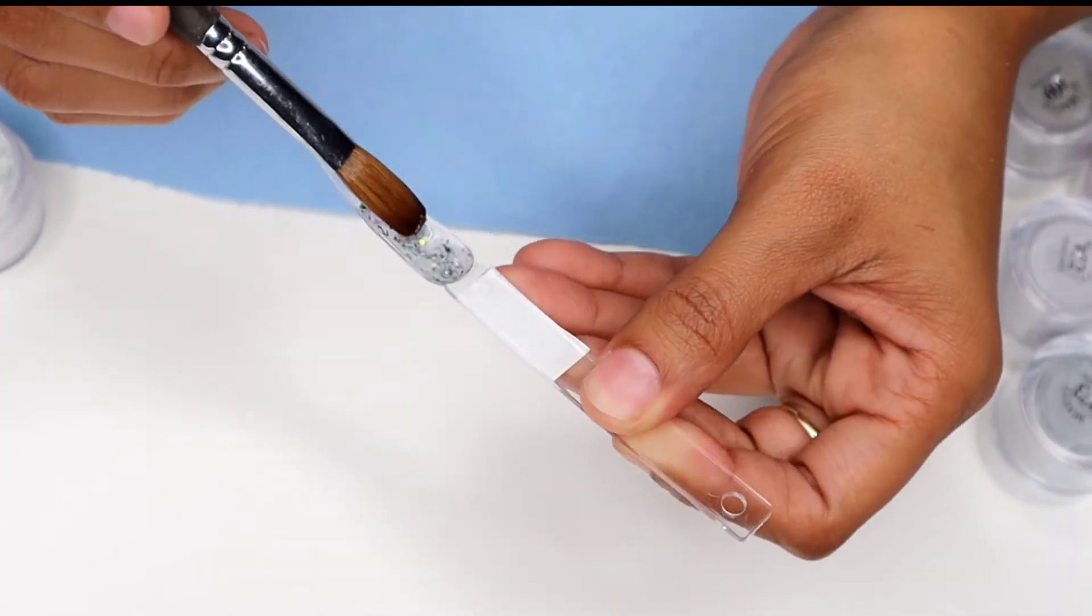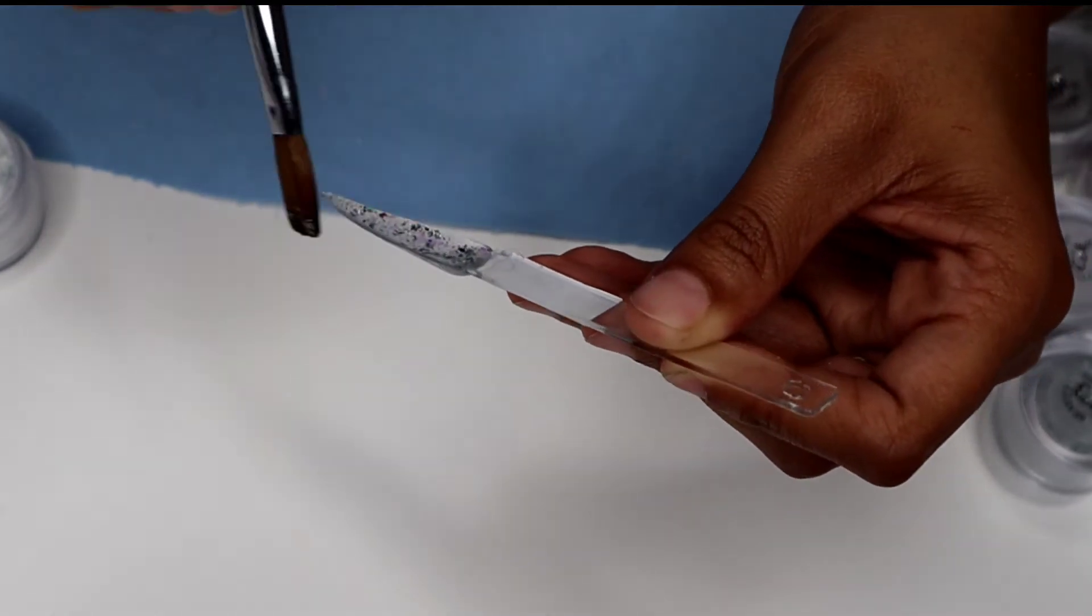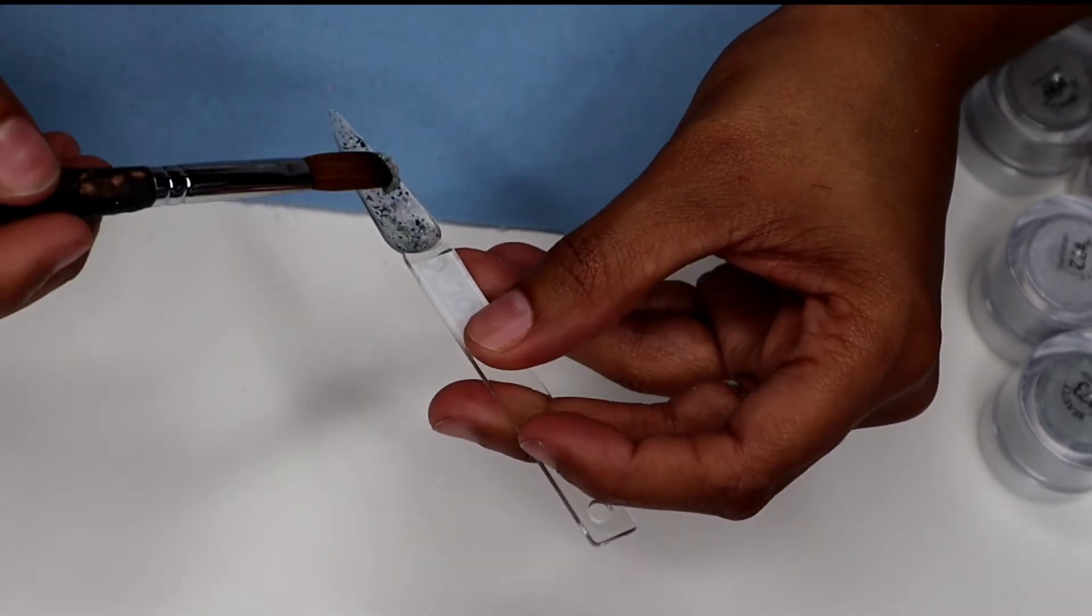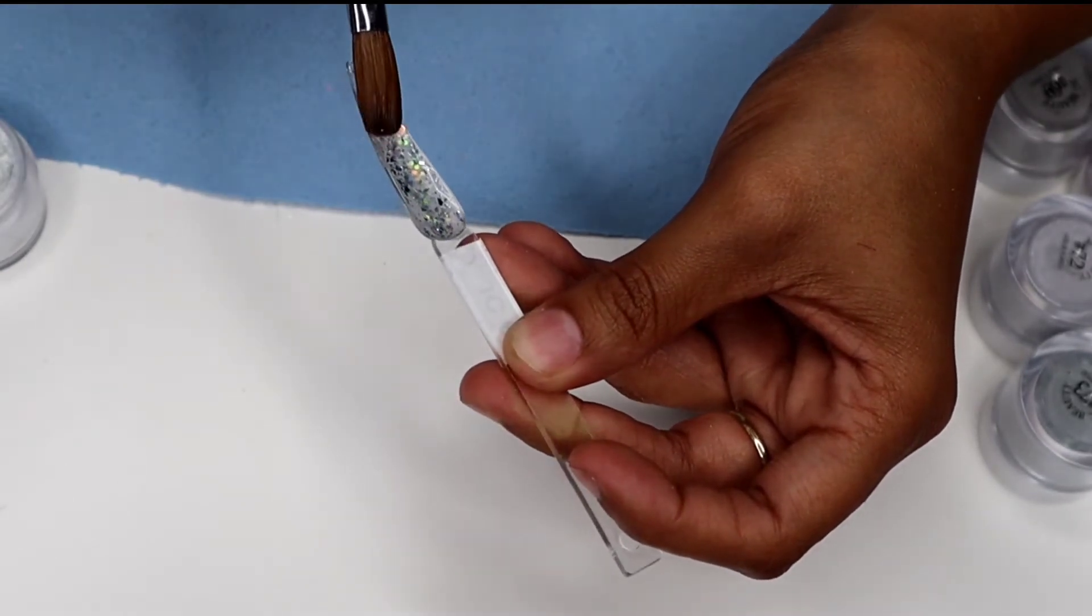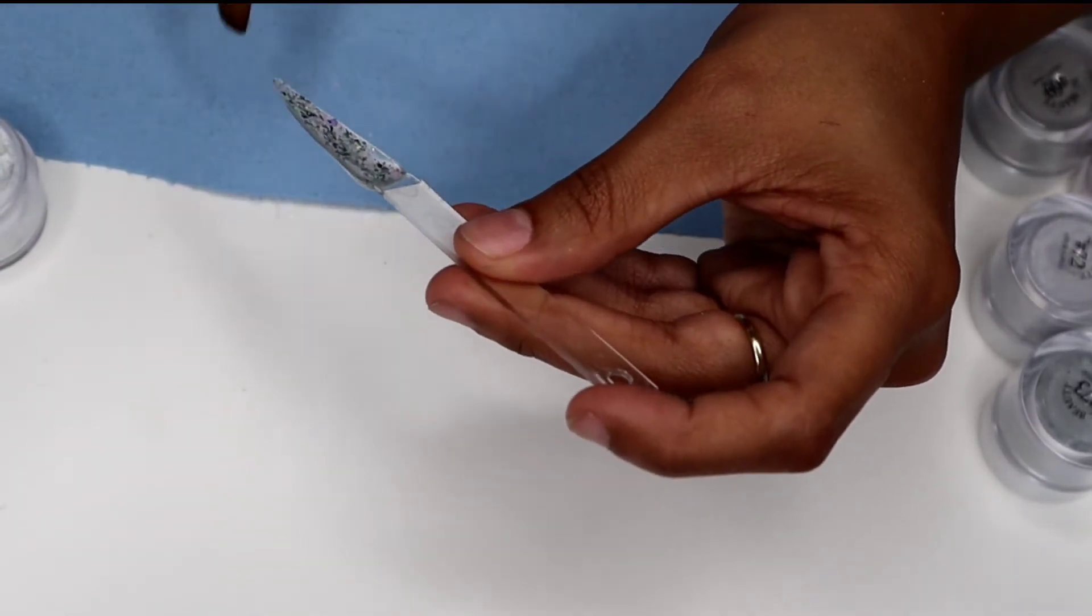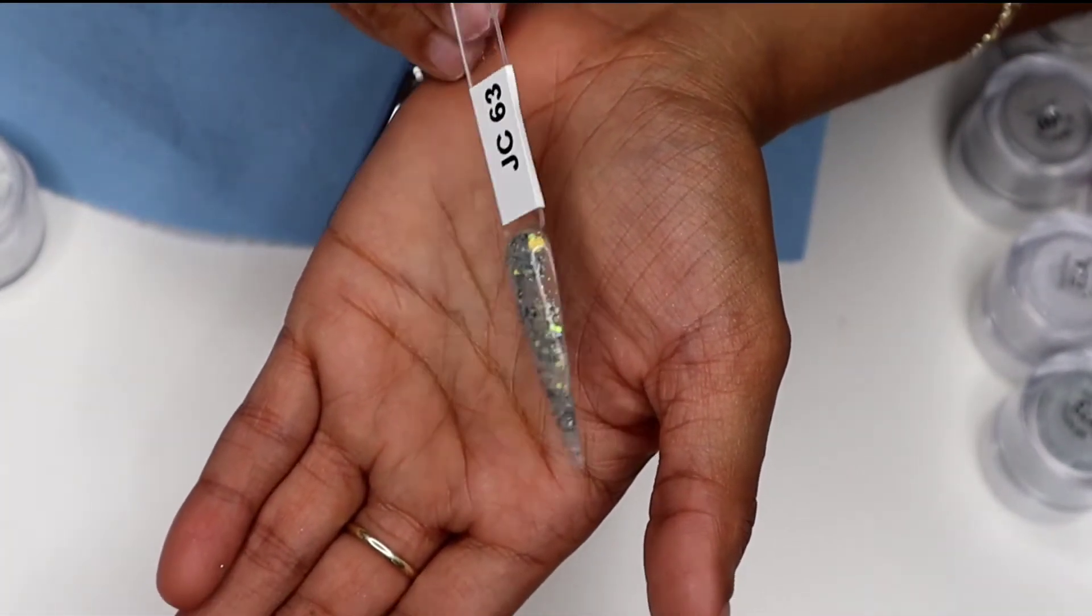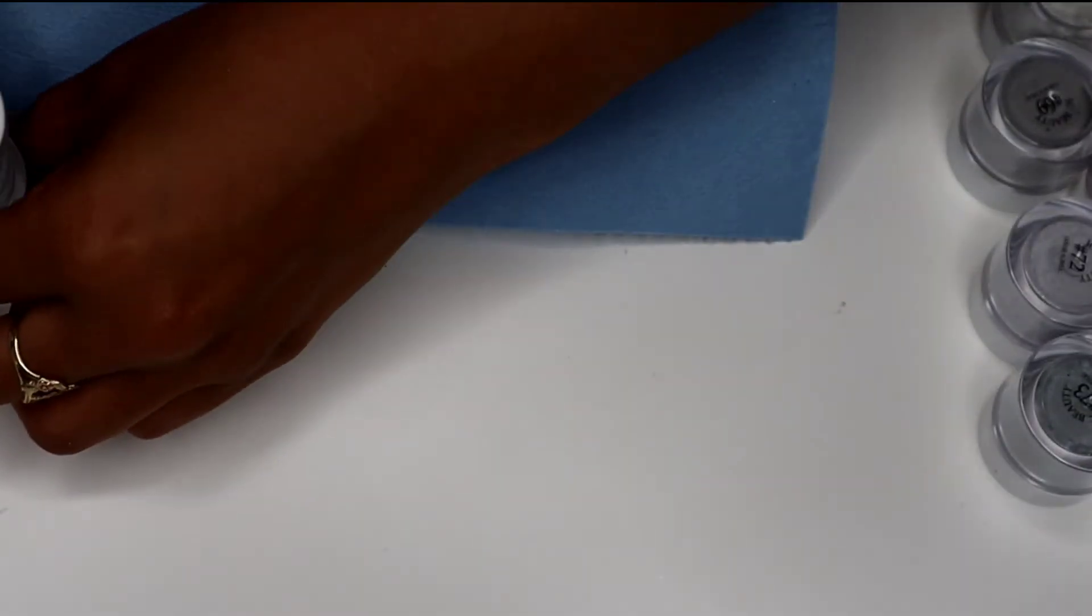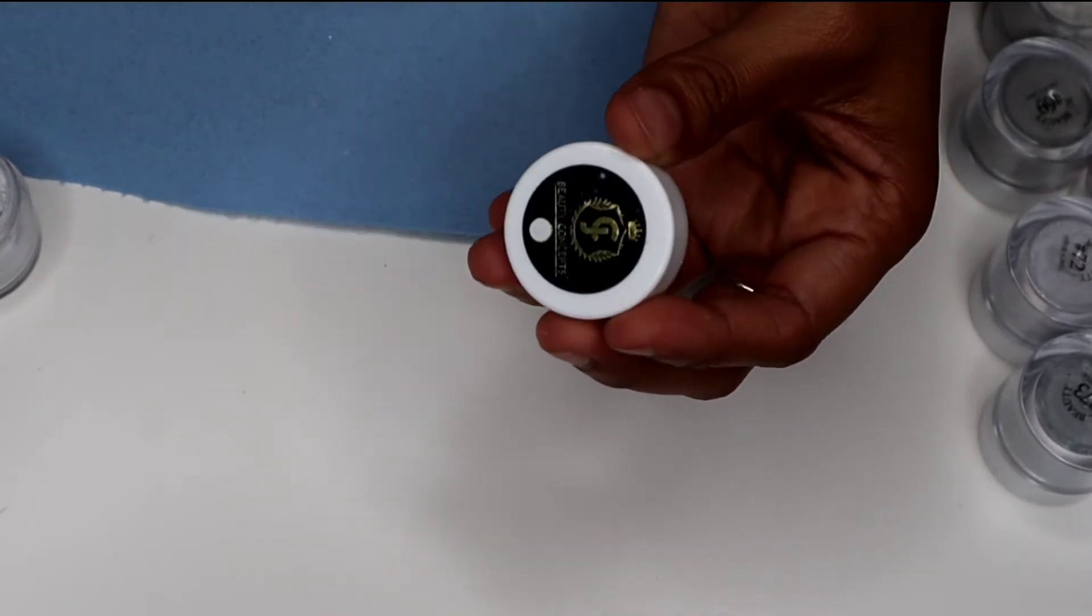And I do use their monomer and their clear powder. Also with this purchase I ordered the white powder and that's pretty smooth. This is 63. We can put it to the side and put a little bit of the glitter on top of that circle.